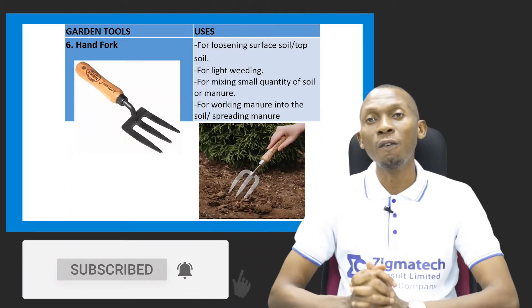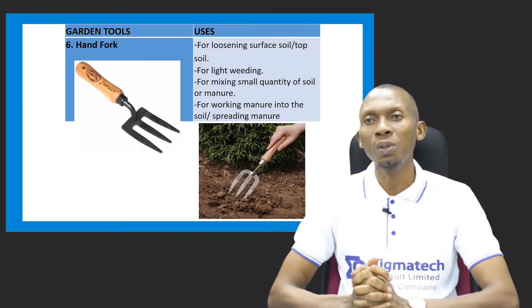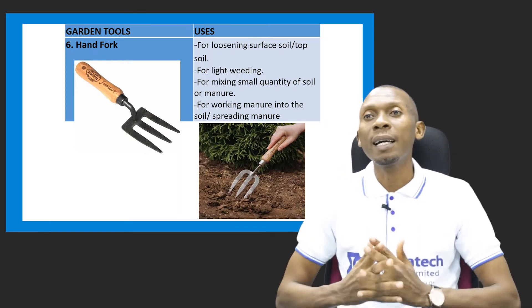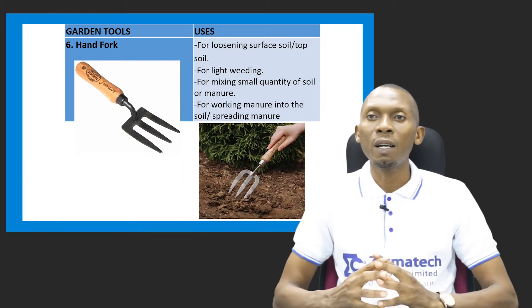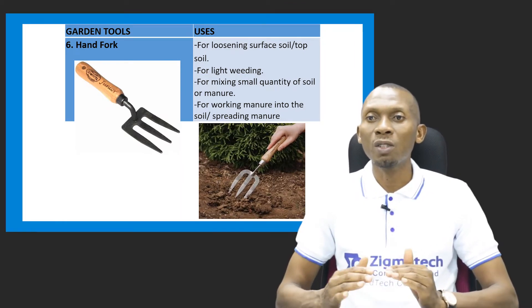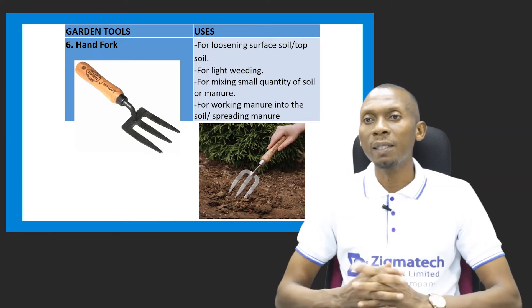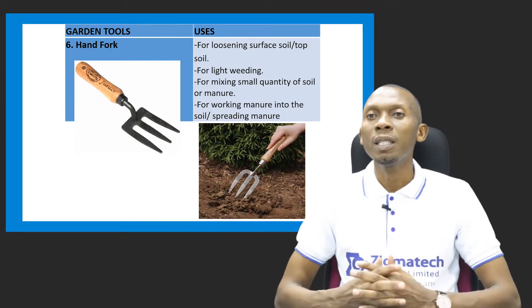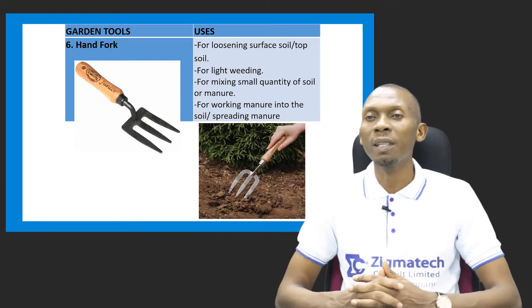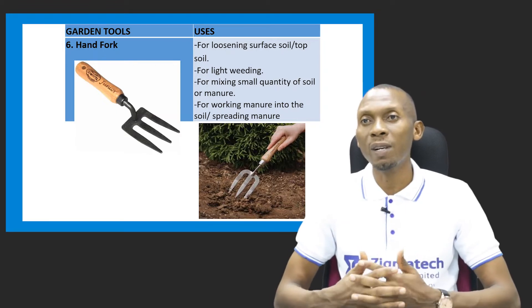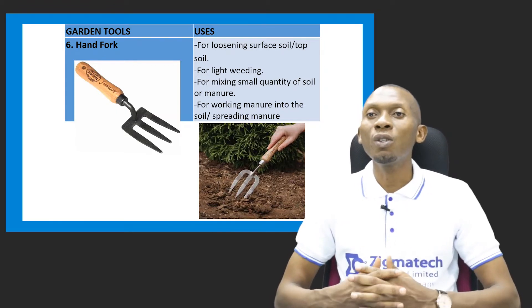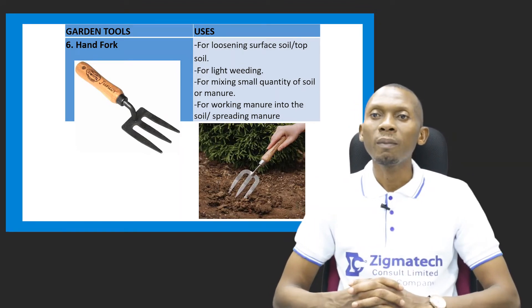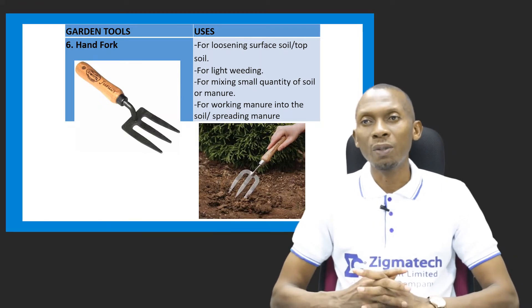We have the hand fork as another garden tool. The hand fork is used for loosening the surface of the soil, especially when the soil is compact or compacted. It can also be used for light weeding — getting rid of unwanted plants or grasses in the field — for mixing small quantities of soil or manure, and for spreading manure as well.